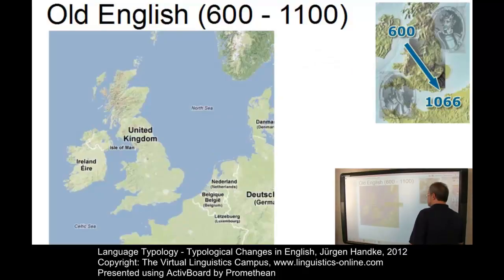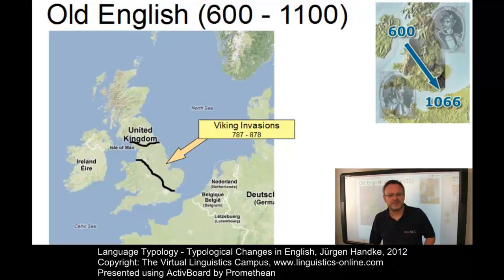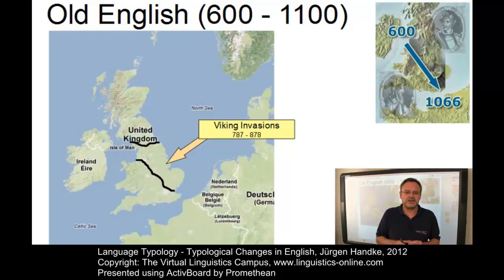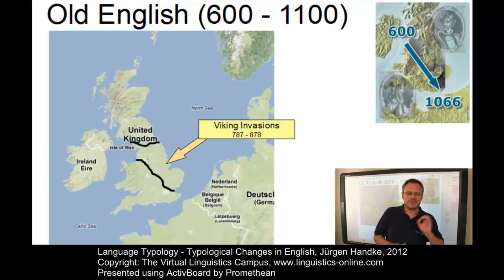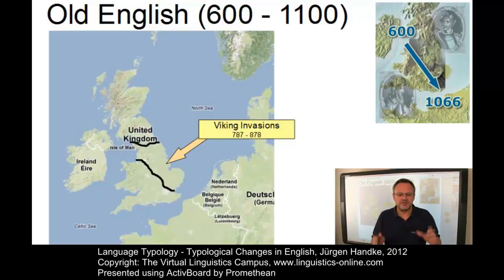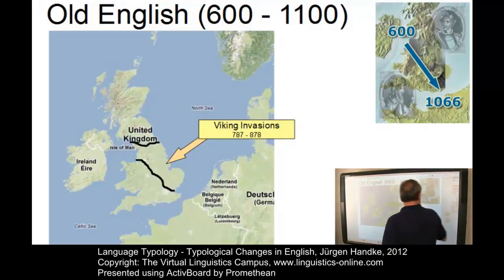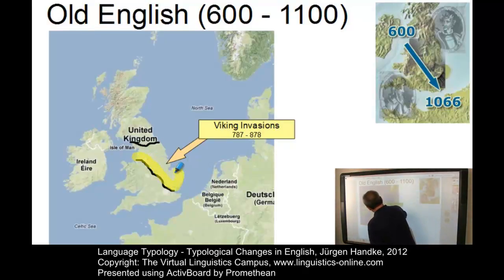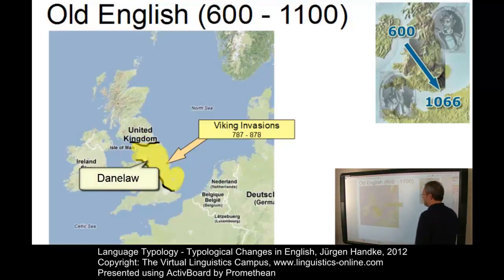From the 8th century onwards, the Vikings came first to plunder and then to settle in parts of the coastal regions of Britain. Their language was Old Norse, which left its mark on the English language. The Vikings occupied vast areas, especially north of the river Humber — the so-called Danelaw, the area shown here between these two lines.